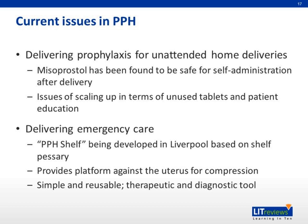Last but not least, in terms of delivering emergency care when there is severe bleeding outside of a healthcare setting: currently, there is the PPH shelf being developed in Liverpool, UK, which is based on a shelf pessary commonly used in uterine prolapses. By inserting the pessary, it provides a platform against the uterus for compression. This removes the need for inserting a fist or hand into the patient's vagina, which may be too invasive for a layperson outside of a healthcare setting. The pessary is simple, reusable, and also serves as both a therapeutic and diagnostic tool — if bleeding does not stop after use, we know the bleeding is likely not within the uterine cavity and may be due to lacerations along the vagina or hematoma.